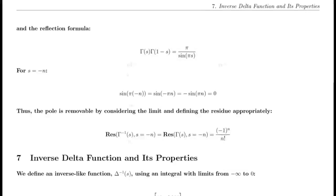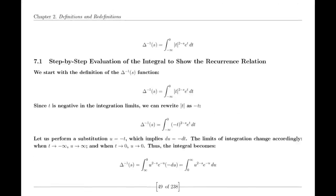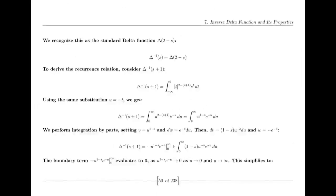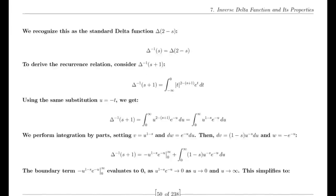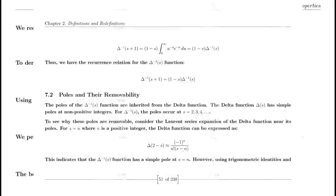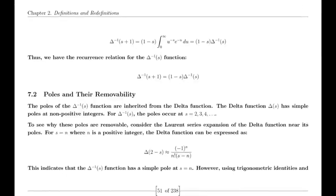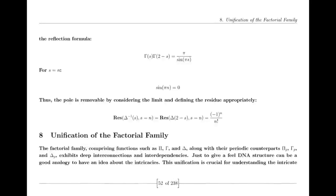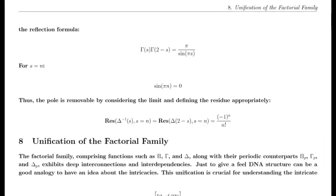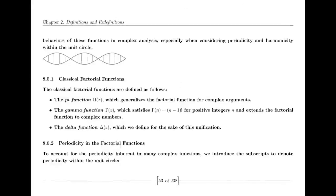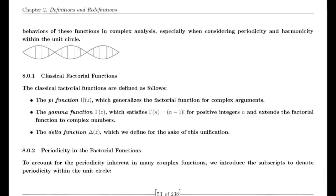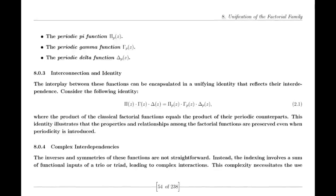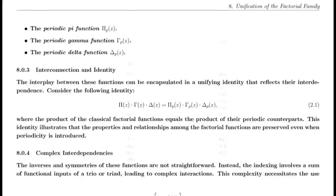Some may say two decimal places are not enough, but consider: in scientific measurements, two decimal places can be enough to disrupt a 5-sigma accuracy, which is often used to assert a discovery in physics. The fact that this expression zeros out at two leading decimal places points to deeper underlying symmetries, much like those proposed by the Riemann Hypothesis, which deals with the precise placement of zeros of the zeta function along the critical line.